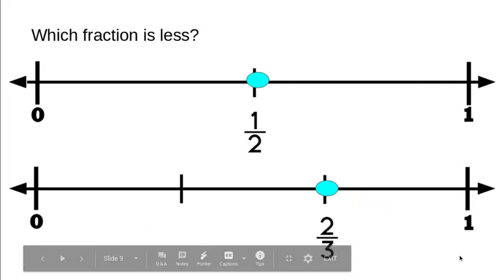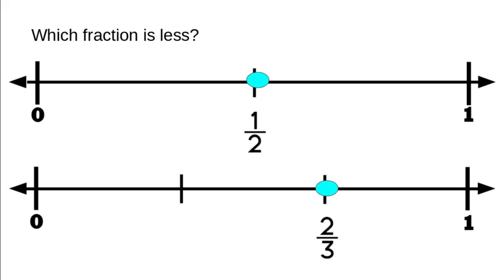Here we have two number lines that are not broken up into the same segments. The first number line is broken up into halves and the second number line is broken up into thirds. They're giving us one half and two thirds, and they want to know which one is less — which one is closer to zero on the number line. If you said one half, you were correct. One half is less than two thirds.